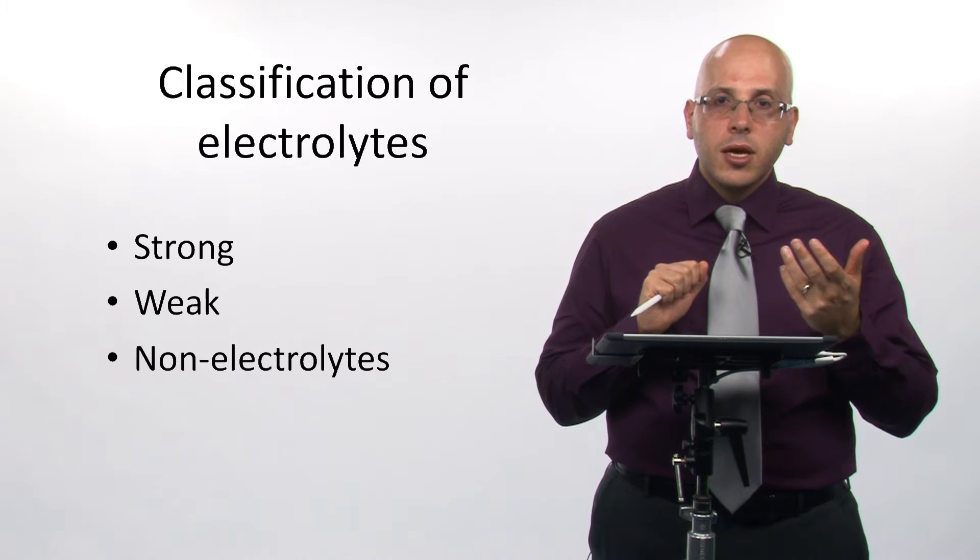Keep in mind here that the words strong and weak only have to do with how well something dissociates and forms ions to conduct electricity, not at all with how dangerous or reactive something is. For example, HF is considered a weak acid because it doesn't dissociate very well. However, HF is extremely dangerous. It can leach all the calcium away from your bones and lead to things like osteoporosis. It'll actually also etch glass. It can actually react with glass, whereas most things don't. Yet it's considered a weak acid because it doesn't dissociate very well.